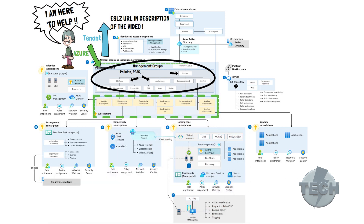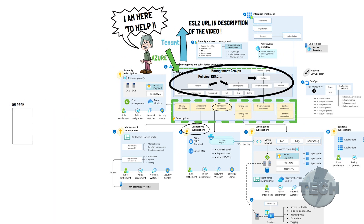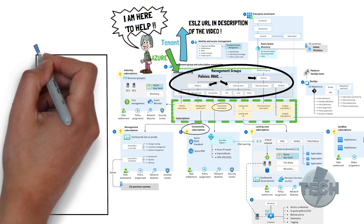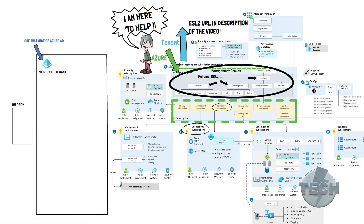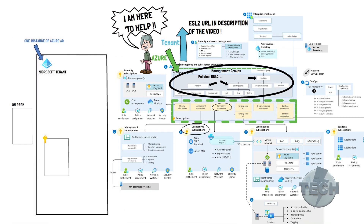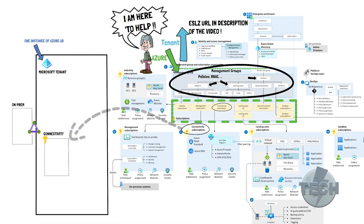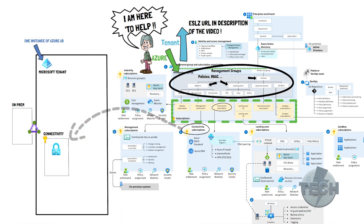This is how Microsoft recommends that you set up your subscriptions. The most central part is the connectivity subscription. On the left-hand side we will have the on-premise data center, or any other data center — it's just not Azure. Over here is our Azure tenant. Remember, an Azure tenant is one instance of Azure AD. Inside this tenant, that's where we place the connectivity subscription. This serves as a shared services hub. The ExpressRoute VPN terminates here. You can also put an Azure firewall here, along with a DNS solution. To this hub, you can then pair the VNets and the other subscriptions.